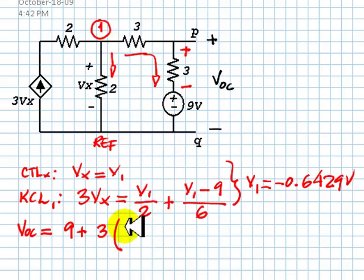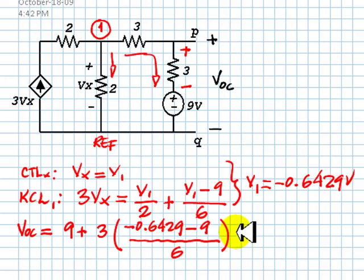divided by 6 ohms, that is the current, and that is VOC.